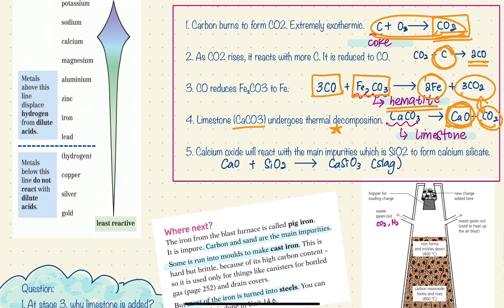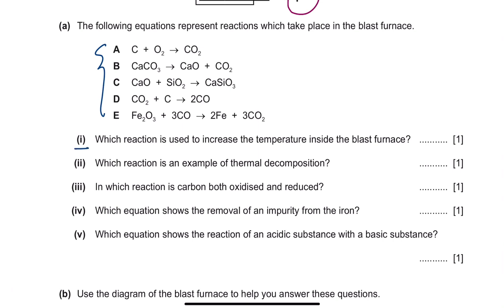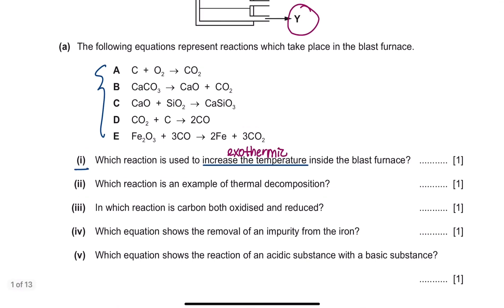This calcium oxide reacts with impurities to form slag. The first part of the question asks which reaction is used to increase the temperature inside the blast furnace. Since increasing the temperature means the process is exothermic, and carbon is oxidized to form carbon dioxide in a combustion process, the answer for the first part is reaction A.